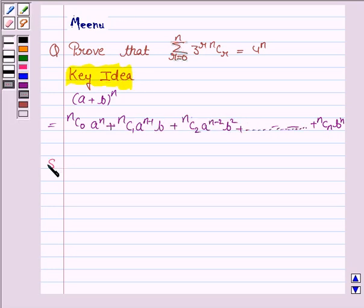Let us now proceed with the solution. We have to prove that 4 to the power n is equal to this expression. Now 4 can be written as 1 plus 3. Therefore,